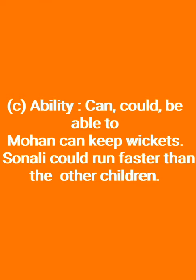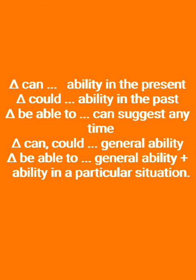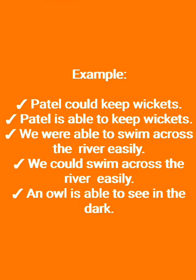Ability: Ability के लिए can, could, और be able to का यूज करते हैं। Can का यूज हम present की ability दिखाने के लिए करते हैं; could का यूज past की ability दिखाने के लिए। Be able to का यूज हम किसी भी time — present हो या past — general ability और ability in a particular situation दिखाने के लिए करते हैं। Examples: 'Patel could keep wickets', 'Patel is able to keep wickets', 'We were able to swim across the river easily', 'An owl is able to see in the dark.'